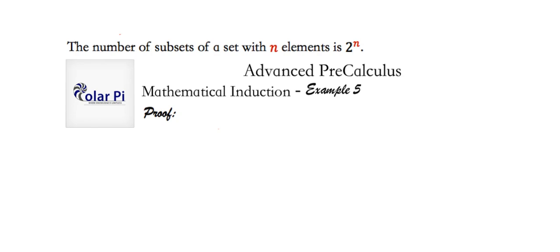Here, we're going to prove that the number of subsets of a set with n elements is 2 to the n. That is, a set with n elements, we're going to show, has 2^n subsets.